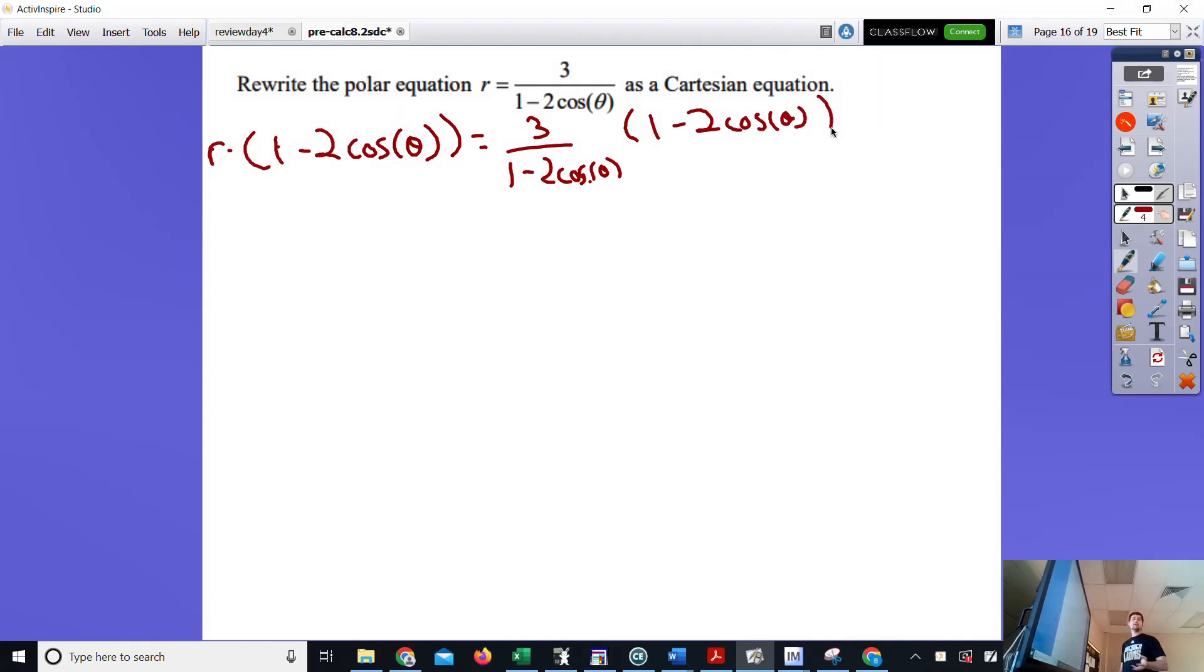Anyways, I'm going to clear the fraction by multiplying both sides by 1 minus 2 cosines of theta. Fraction is gone. Now what I'm going to do is I'm going to distribute my r in. It's going to give me r minus 2r cosines of theta equal to 3.